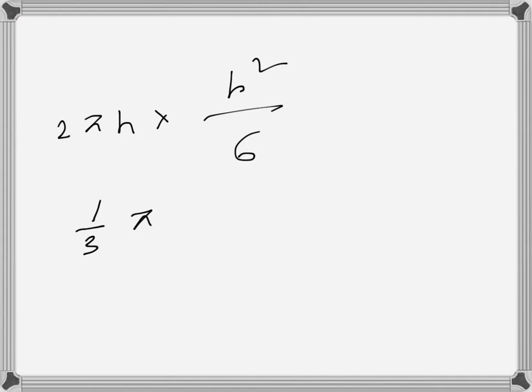This becomes one-third π r squared h. This is the volume of the cone that's generated, and we have used cylindrical shell method to find the volume.